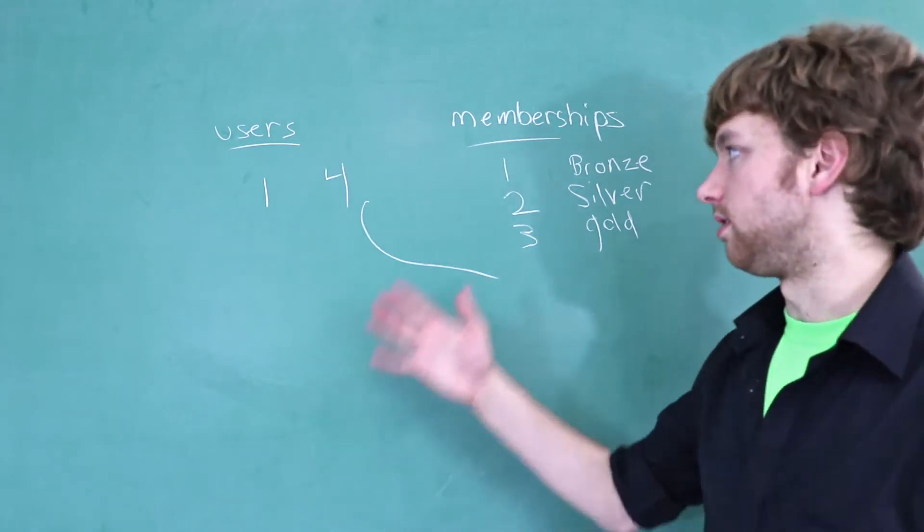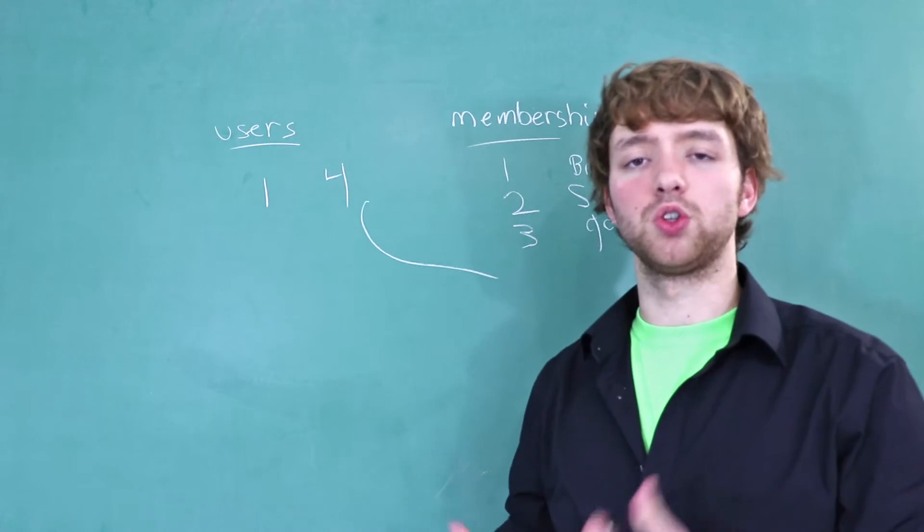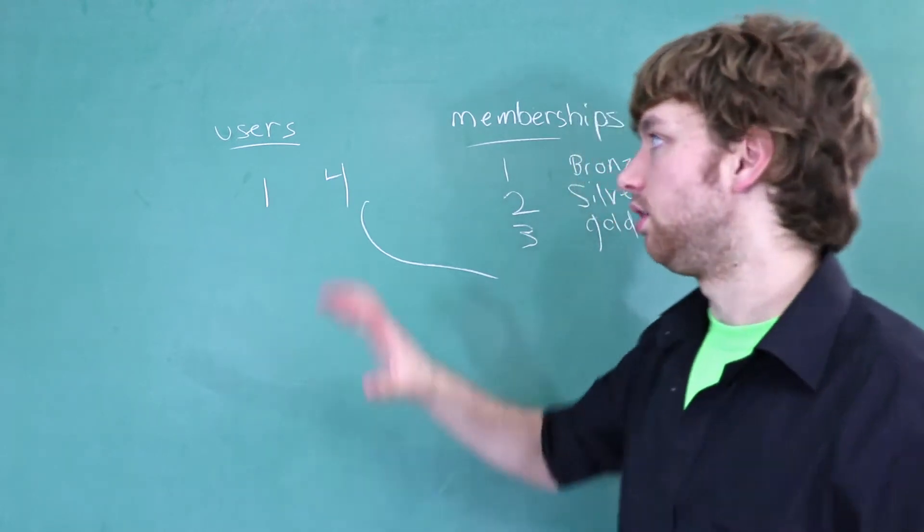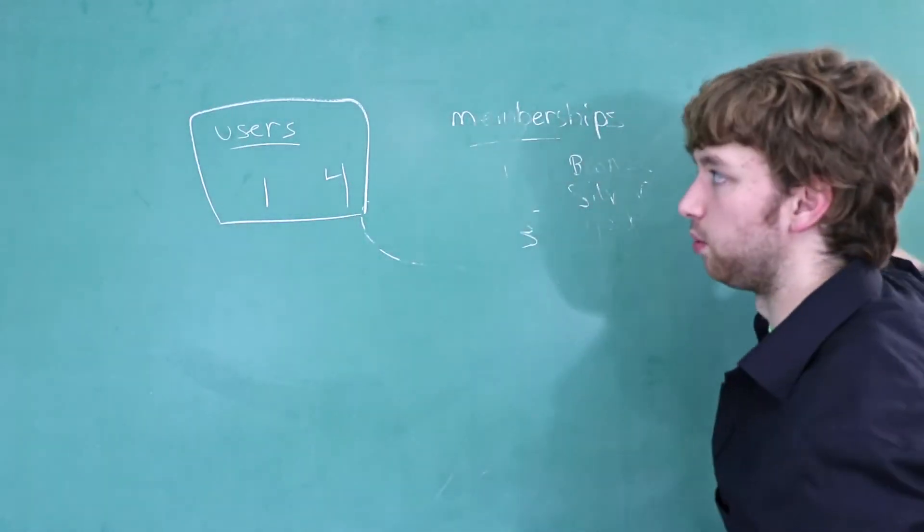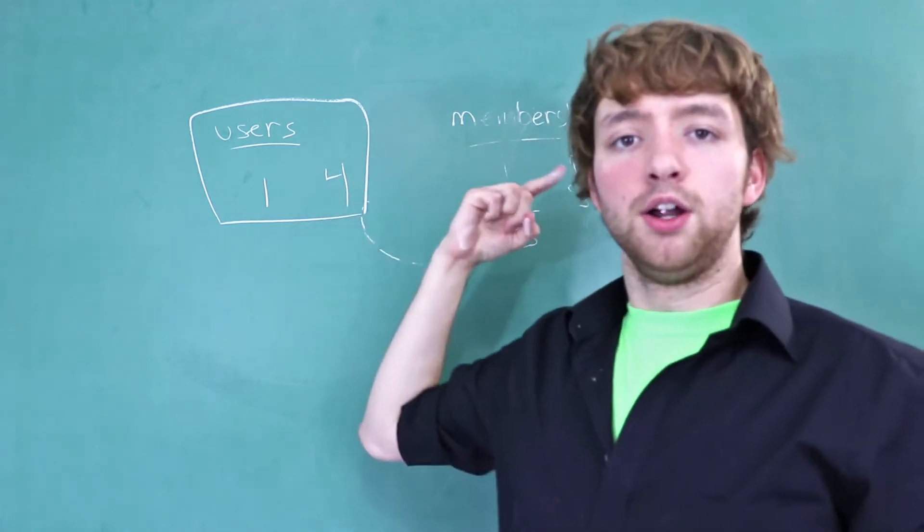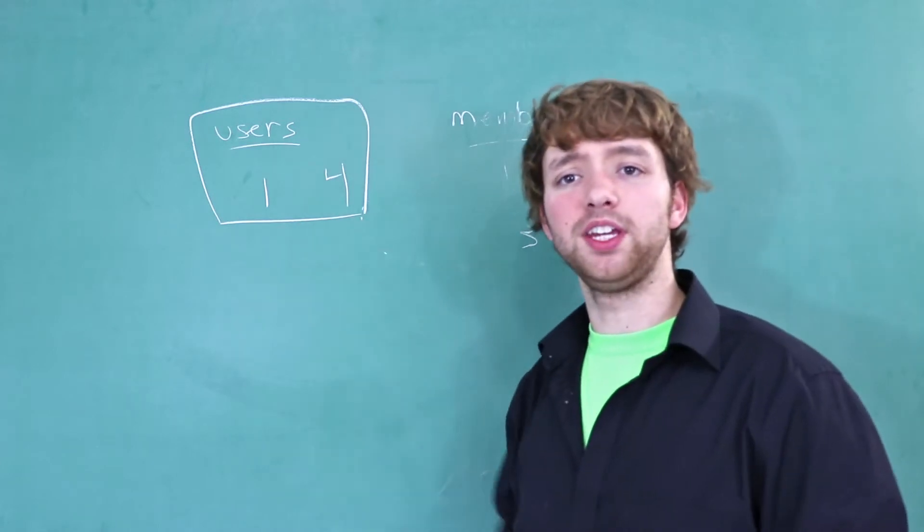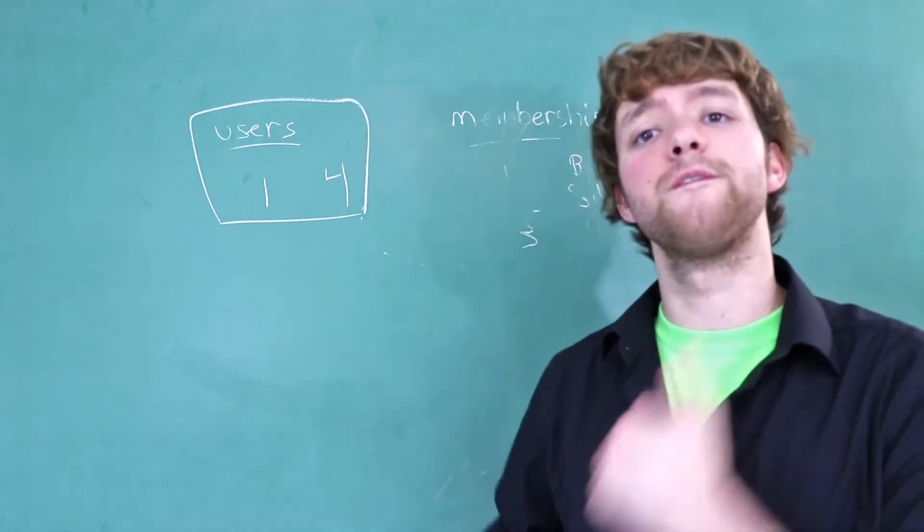With foreign keys, this kind of thing cannot happen. And that's what referential integrity is. All of our references have integrity. When you look at this here, without any kind of references or without this membership table, you can be assured that that four references something. It has integrity. You get rid of a foreign key, now you've got problems. And you don't want problems. So make sure you use foreign keys.